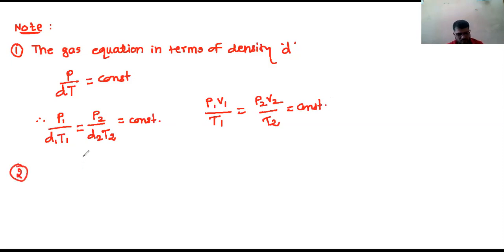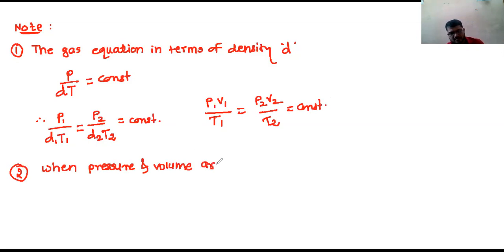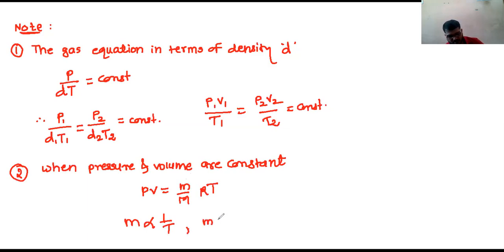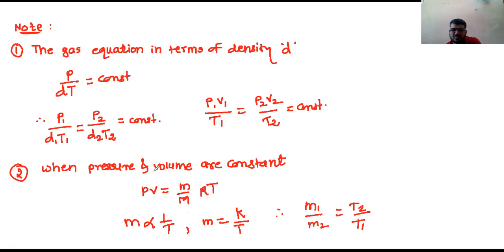The next note point we have learned: when pressure and volume are constant, we have pV = (m/M)RT, and that implies m is inversely proportional to temperature. So m1/m2 = T2/T1. This is the formula in terms of mass and temperature when pressure and volume are constant. This is the form of the ideal gas equation — we have already learned this.